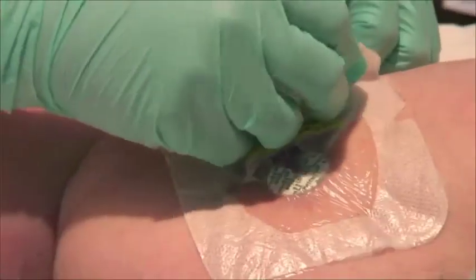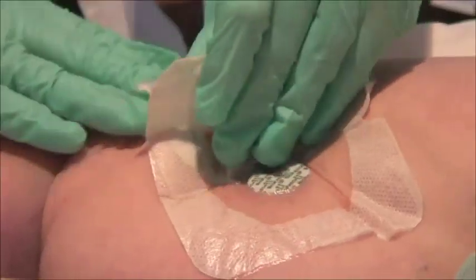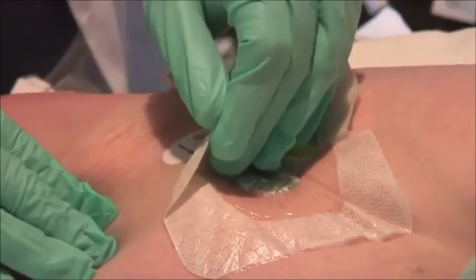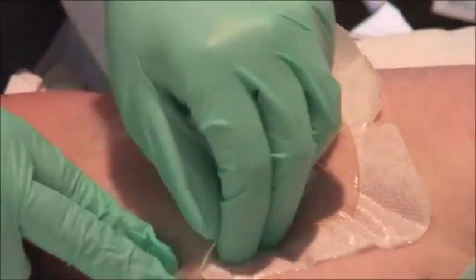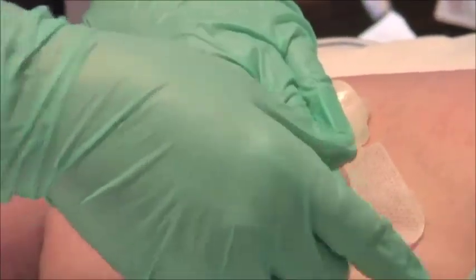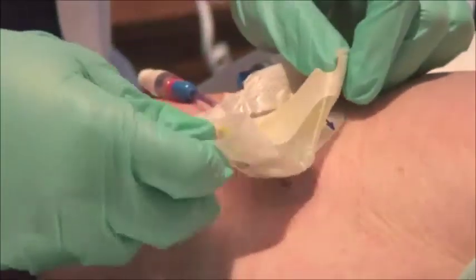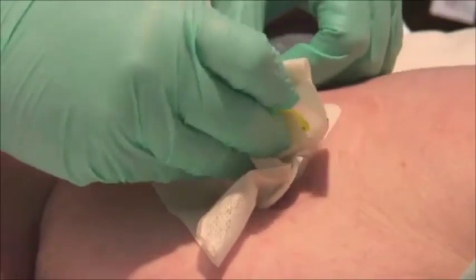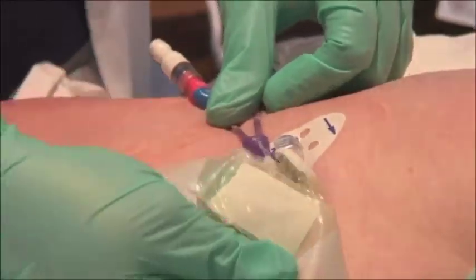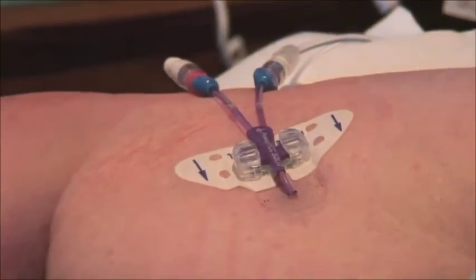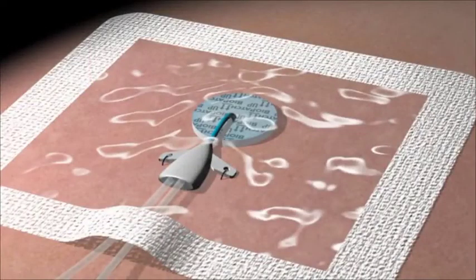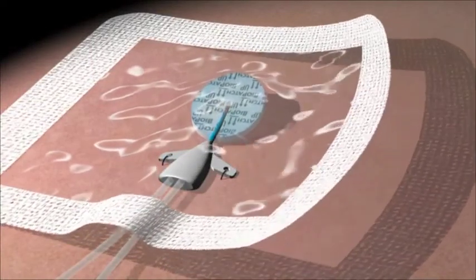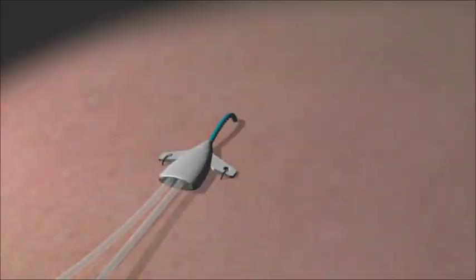When changing BioPatch, first remove the transparent dressing by picking up the corner of the dressing and stretching the dressing away from the catheter while holding the catheter in place. The dressing will partially lift. Peel back until resistance is felt. Repeatedly stretch and peel as necessary until the dressing is removed. BioPatch will remain attached to the transparent film dressing, so removal will be simultaneous.